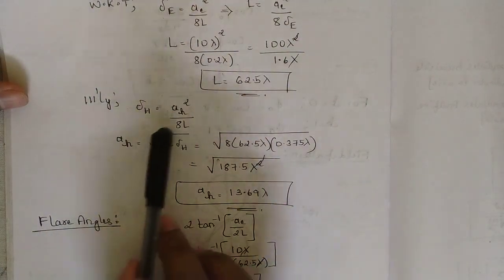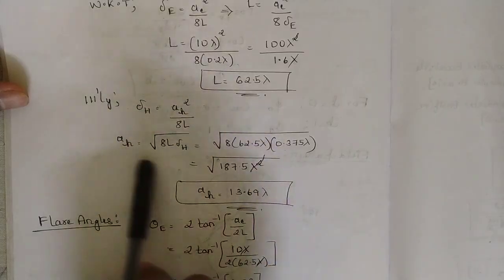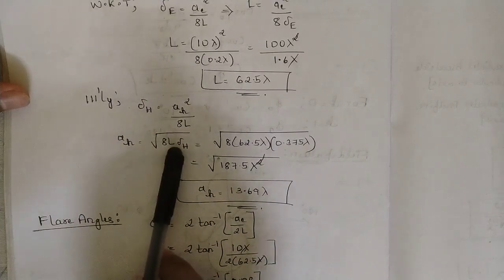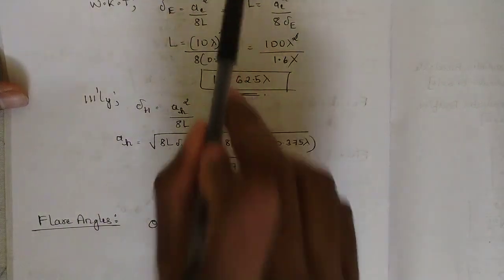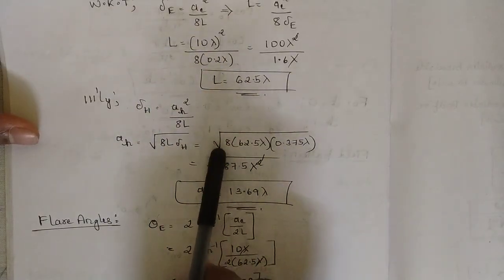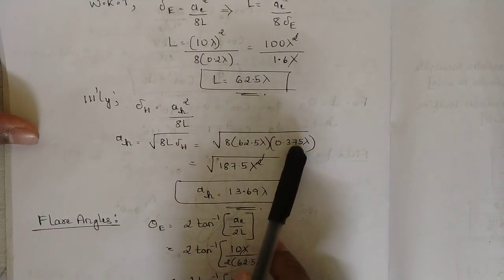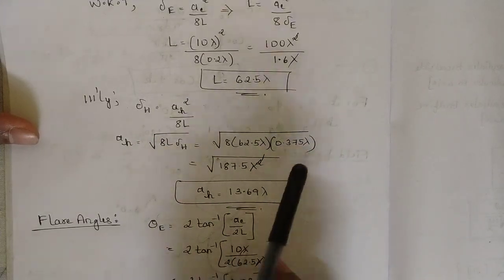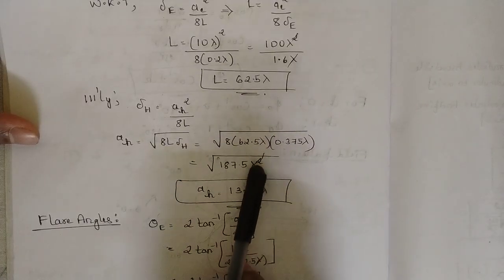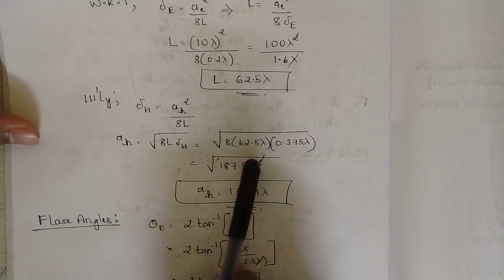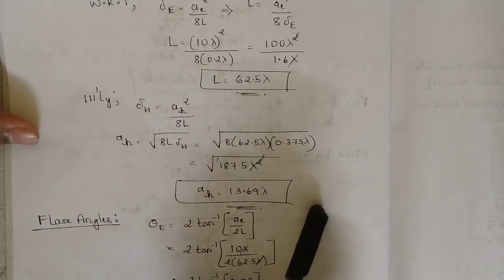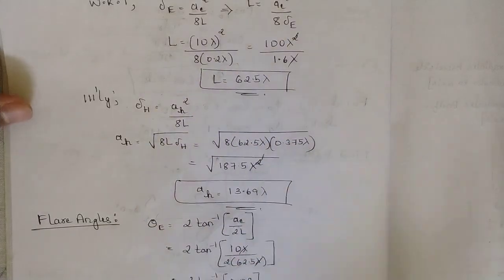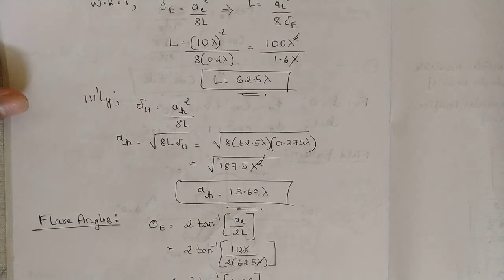Substituting: a_h = √(8 × 62.5λ × 0.375λ) = √(187.5λ²). The square root gives a_h = 13.69λ. So the H-plane aperture is a_h = 13.69λ.